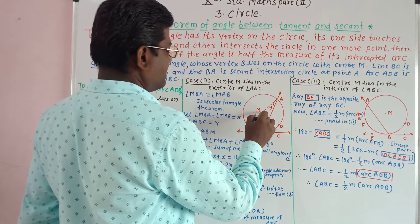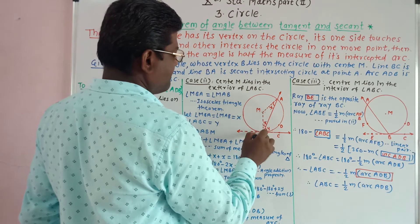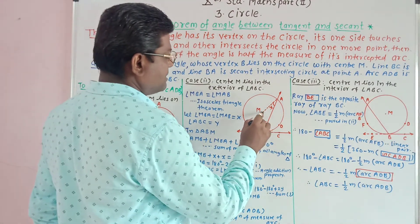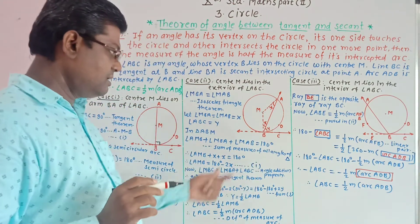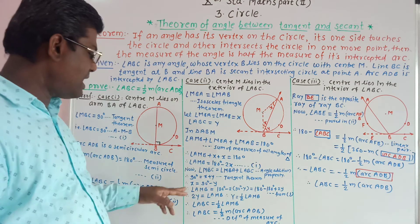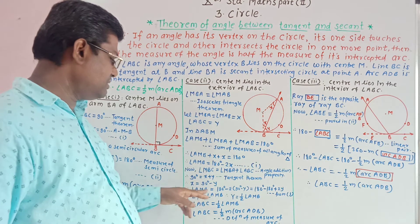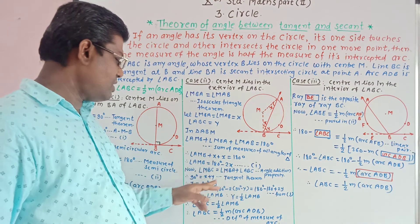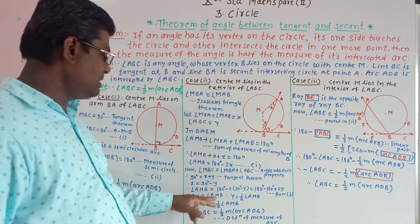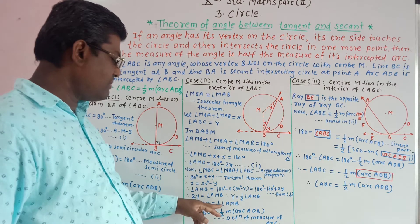Consider angle MBC = angle MBA + angle ABC, so angle MBC = x + y. But angle MBC = 90° (angle between tangent and radius). Therefore 90° = x + y, giving x = 90° − y. Substituting back: angle AMB = 180° − 2(90° − y) = 180° − 180° + 2y = 2y. Therefore y = 1/2 × angle AMB, so angle ABC = 1/2 × angle AMB.